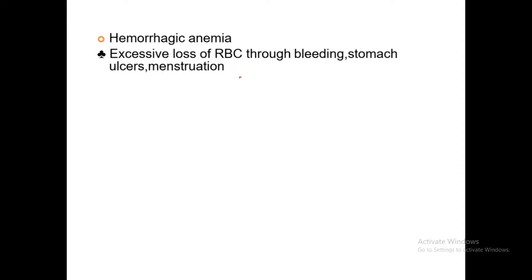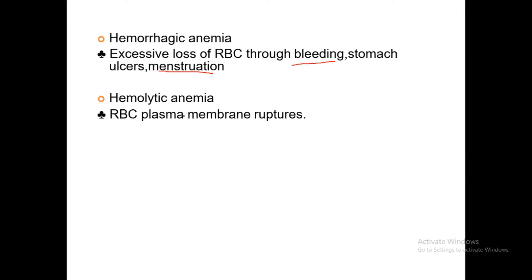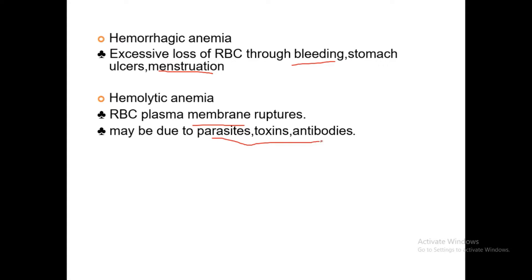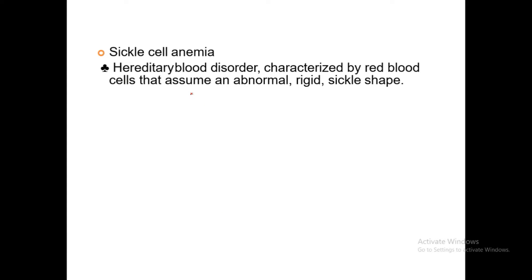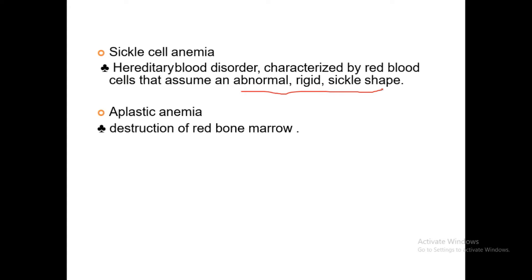Hemorrhagic anemia involves excessive loss of RBCs through bleeding, stomach ulcers, or menstruation. Hemolytic anemia occurs when the RBC plasma membrane ruptures, due to parasites, toxins, or antibodies. Thalassemia involves less synthesis of hemoglobin or structurally abnormal hemoglobin, found in populations of the Mediterranean Sea. Sickle cell anemia is a hereditary blood disorder where RBCs assume an abnormal rigid sickle shape. Aplastic anemia results from destruction of red bone marrow, caused by toxins or gamma radiation.